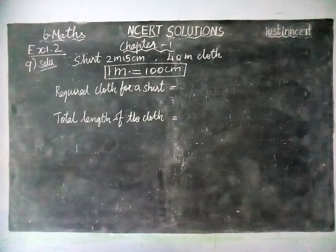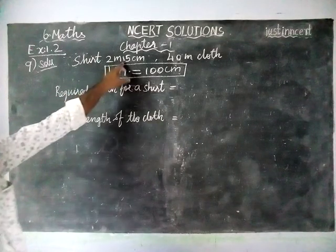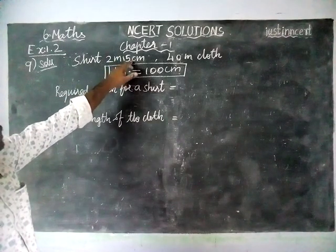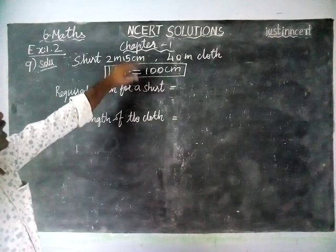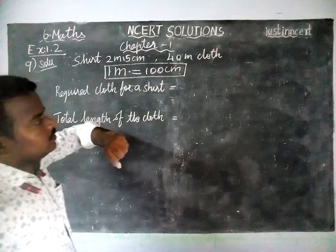Listen, to stitch a shirt, we need 2 meter 15 centimeter cloth. And the total length of the cloth is 40 meter.